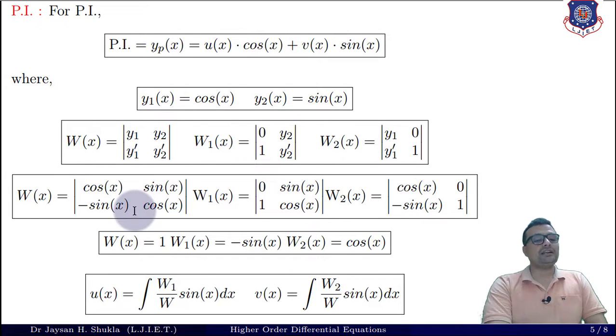Now expanding, this gives me W as cos²(x) minus (-sin²(x)), which simply gives me sin²(x) + cos²(x) = 1. For W₁ it is 0 - sin(x), so W₁ = -sin(x). For W₂ it is cos(x) - 0, so W₂ = cos(x). So now we have W, W₁ and W₂.